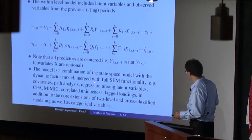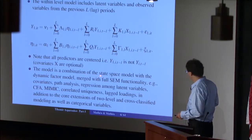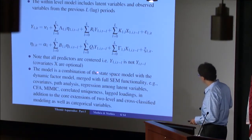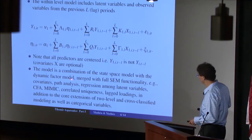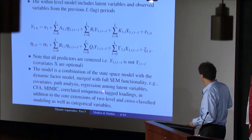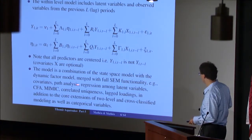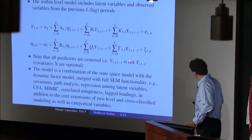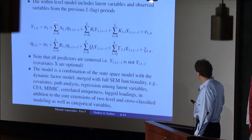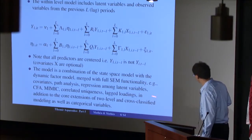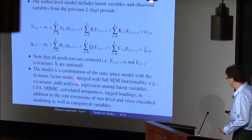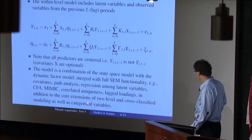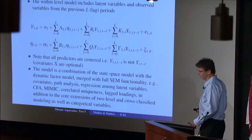This model is a combination of the state-space model and the dynamic factor model, and it merges these with full SEM functionality such as covariates, path analysis, regressions among latent variables, CFA, MIMIC models, correlated uniqueness, and lagged loadings for latent variables from previous periods. In addition to these within-level generalizations, the core extensions of two-level modeling, cross-classified modeling, and categorical variables are also incorporated.